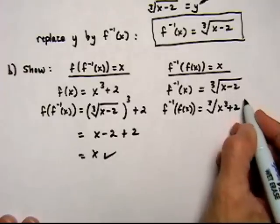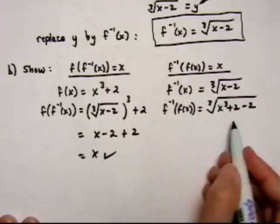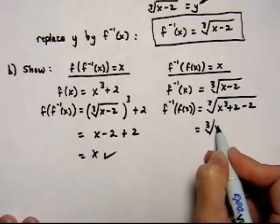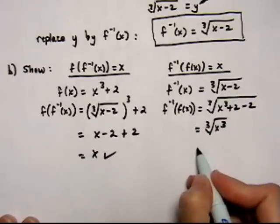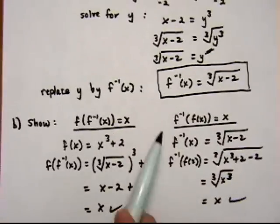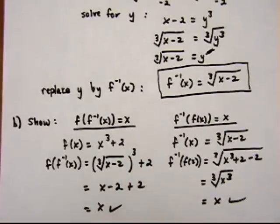And then bring this minus 2 down. The 2's cancel out. And we're left with cube root of x cubed. And that gives us x. And that checked out, so we did correctly find the inverse function of f of x.